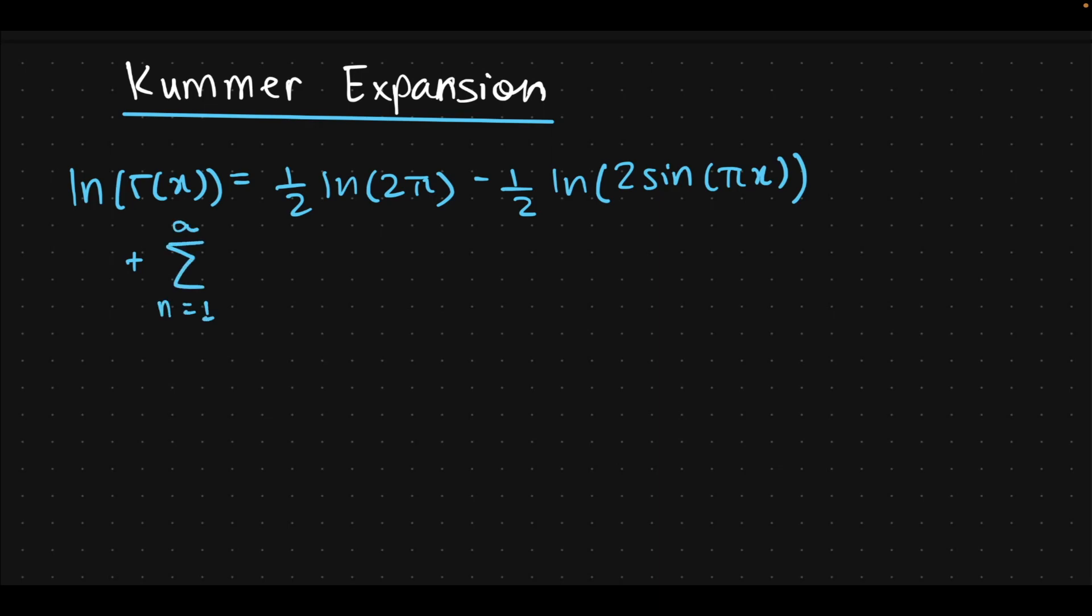Sum from n equals 1 to infinity of Euler-Mascheroni plus natural log of 2nπ over πn, sine of 2πnx.